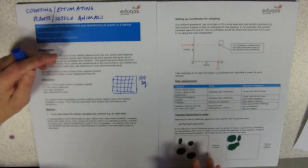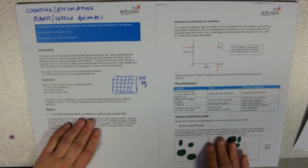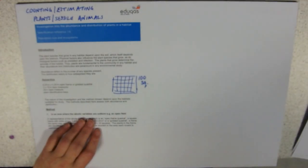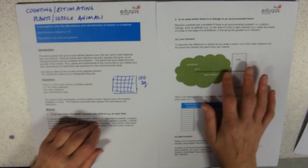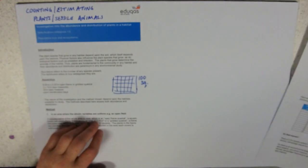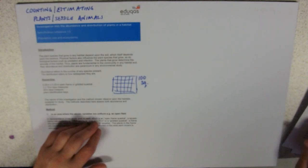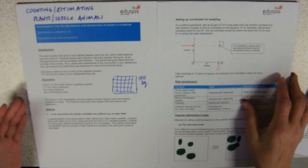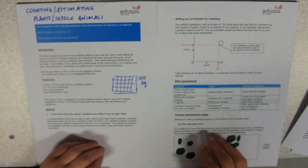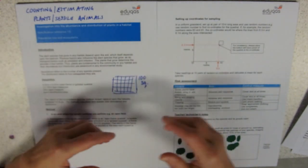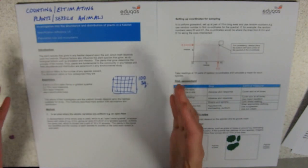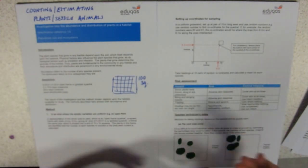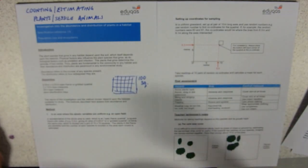We've got two different methods that we would use. One is where the abiotic variables are uniform, or you want to compare abiotic factors — that's non-living factors — in two different areas. The other is where you've got a change in an environmental factor in your habitat. For example, if you were looking at water content in soil or drainage capability and comparing what was growing in a well-drained area with a poorly-drained one, or ponds with pH 5, 7, and 10, you would need to use this kind of technique.